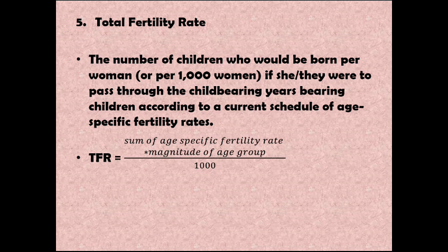Next we have the Total Fertility Rate. The total fertility rate is the number of children who would be born per woman, or per thousand women, if she or they were to pass through the child-bearing years bearing children according to a current schedule of age-specific fertility rates. The formula is: TFR = sum of age-specific fertility rates × magnitude of age group ÷ one thousand.